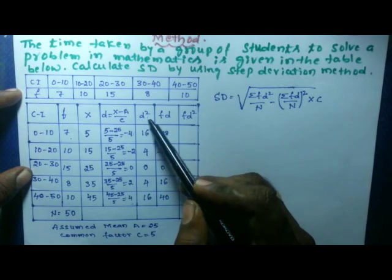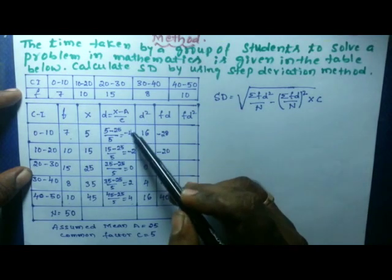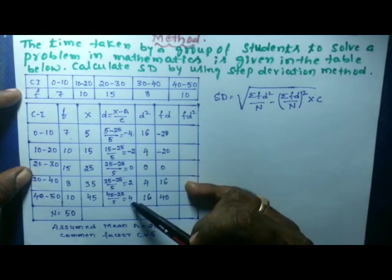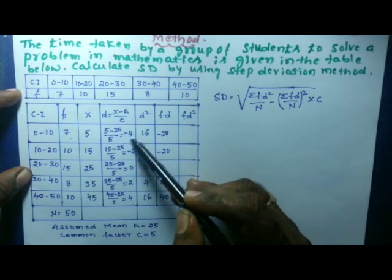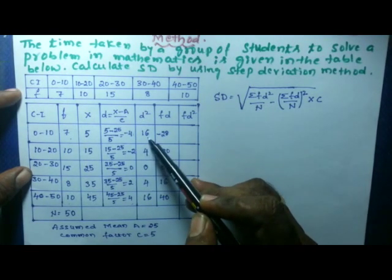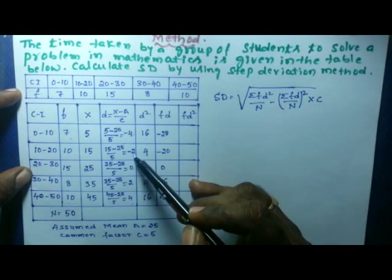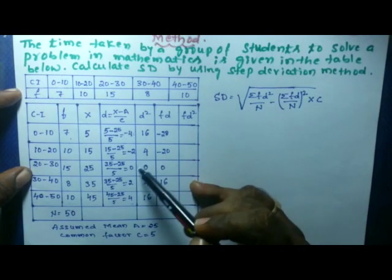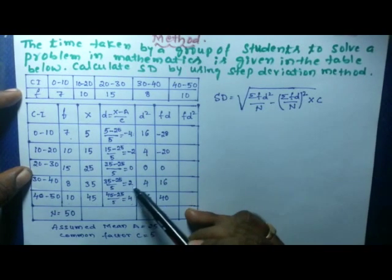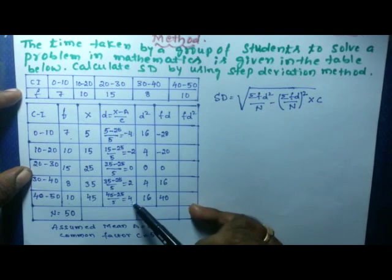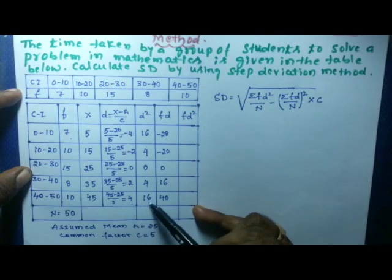The next column is d². Squaring each d value: (−4)²=16, (−2)²=4, 0²=0, 2²=4, 4²=16.